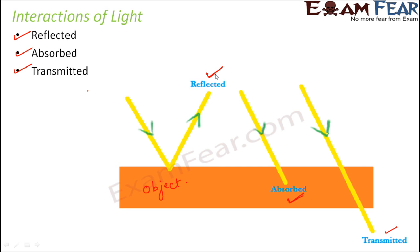Depending on how much light is reflected, how much is absorbed, and how much is transmitted, an object is classified as transparent, translucent, or opaque. Now, what decides what the interaction of light will be? How do we know how light is going to behave with a particular type of object? That completely depends upon the nature of the material of the object and also on the nature of the medium through which the light travels — whether light is travelling through air, water, or any other medium.